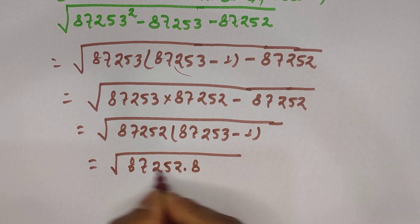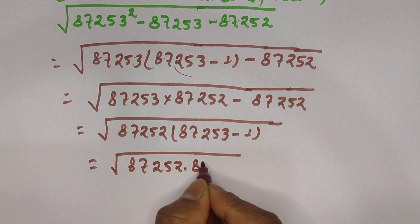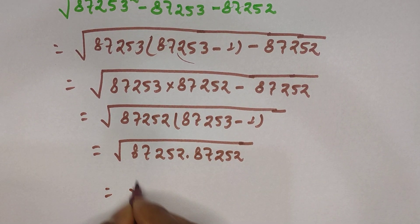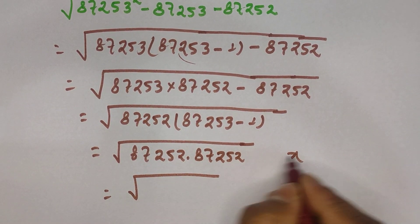We again get the same value, same number like this: 87252. So when you multiply this one, then you can write this one as, this is very similar